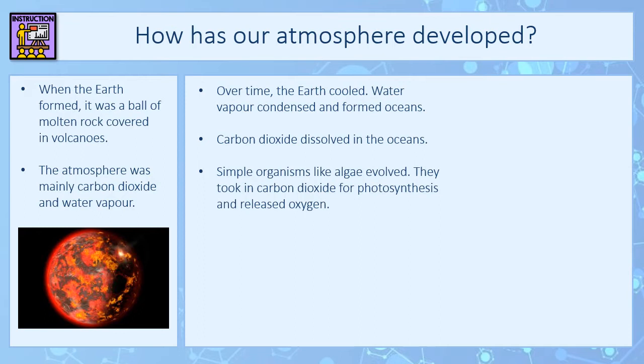We also got some very simple organisms like algae evolving about 2.7 billion years ago, and those algae took in carbon dioxide for photosynthesis and released oxygen in that process. Some carbon dioxide was also locked away in sedimentary rocks and fossil fuels. Those simple organisms took in carbon dioxide for photosynthesis and converted it into glucose during that process.